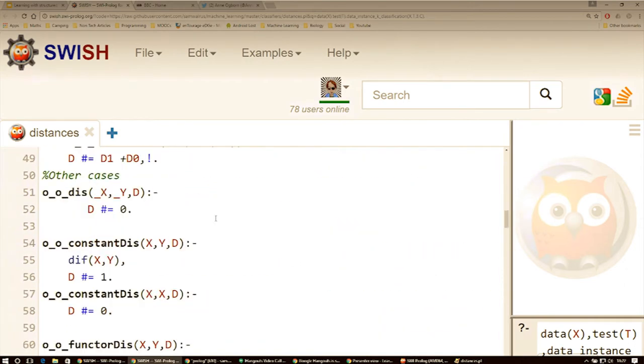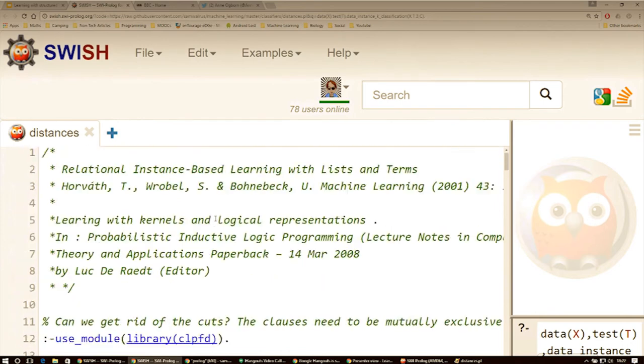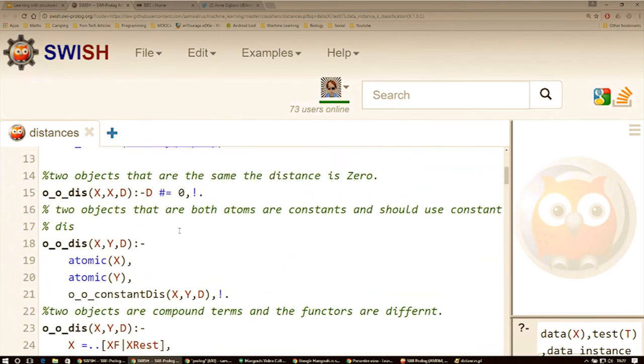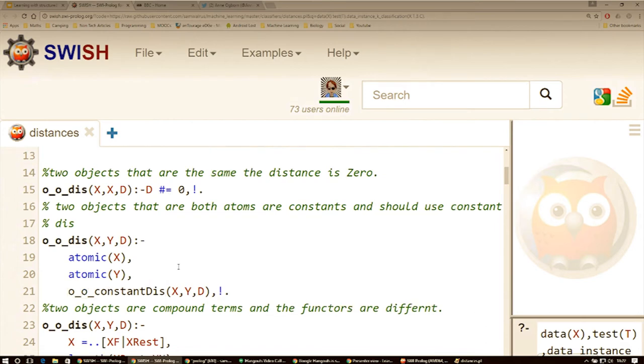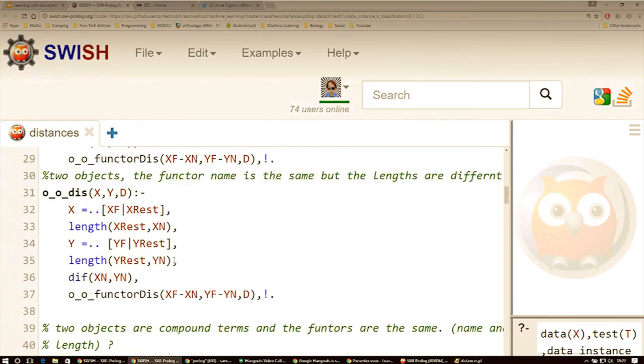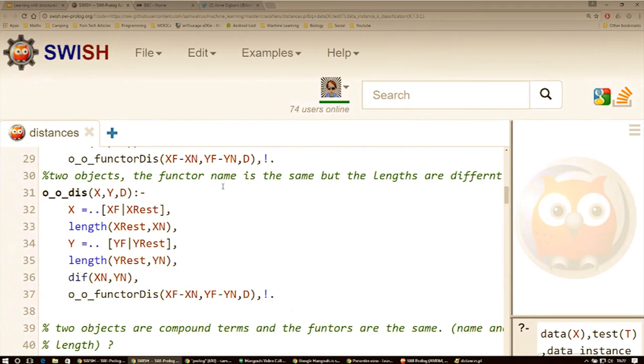So let's just scroll up and we're going to look at the distance function. So it's just a very simple mismatch kernel. So we're just going to say if two objects are the same, then the distance is zero. And if two objects are both atoms, so they're both constants, then we're going to use the constant distance. If they're compound terms and the functors are different, then we're going to use functor distance. And if they're two objects, the functor is the same, but the lengths are different, we're going to use this.